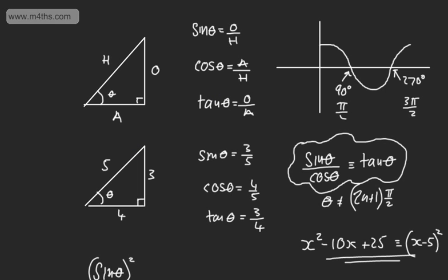So our two trig identities: sine theta over cos theta is tan theta, and sine squared theta plus cos squared theta is equal to 1.